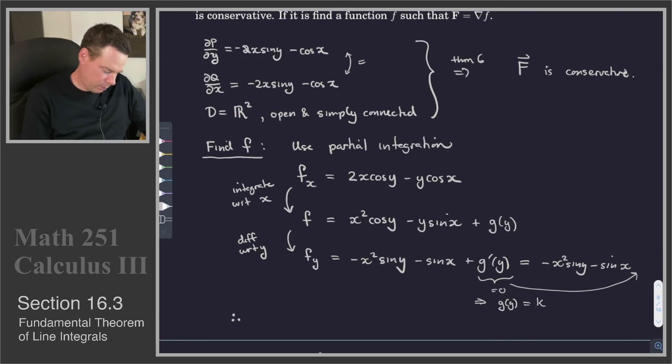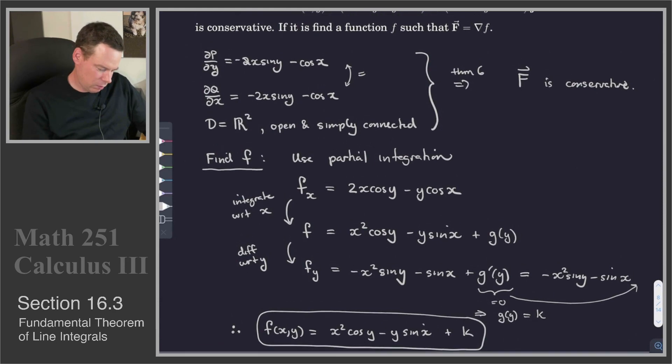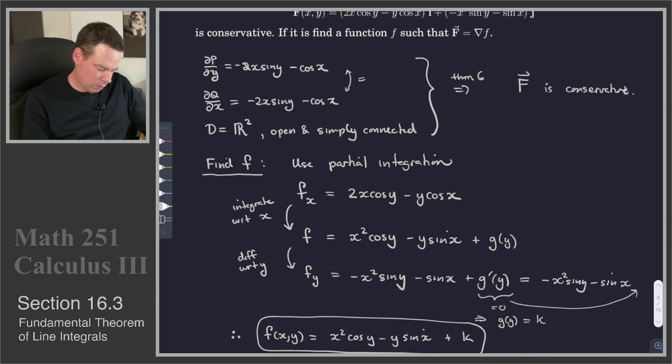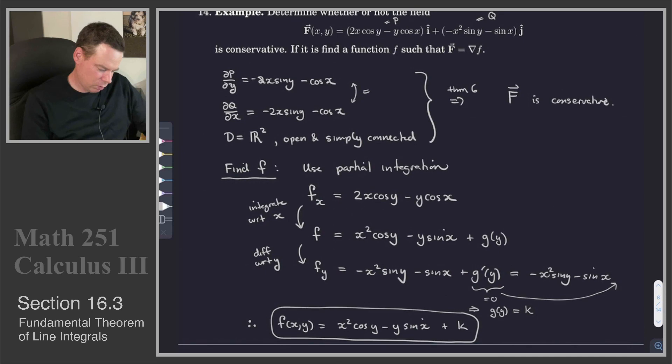So what we get is, therefore, our function, our potential function, g of x,y, is x squared cos y minus y sin x plus a constant k. And this function has the property that, when I take its gradient, I get the vector field up above. Maybe I'll minimize it just a bit so we can see them both fit on the screen.